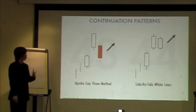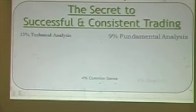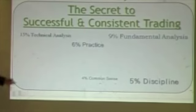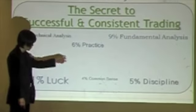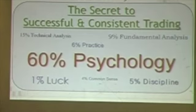So a lot of people, they see these reversal patterns, but they are like, wow. 15% technical analysis, 9% fundamentals, 5% discipline, 6% practice. What is this? 1% luck, because luck is only at the beginning of the trade. About 60% psychology.